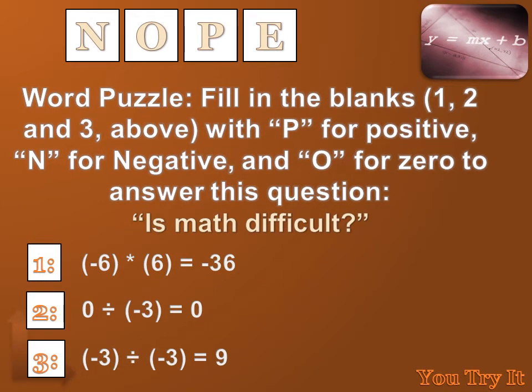Is math difficult? Well, let's find out. The answer to the first question was minus six times six equals minus 36. That's a negative number, so I put an N in that first box. The second question was zero divided by minus three. Well, zero divided by minus three equals zero, so I put a zero or an O in the second box. The third question was minus three divided by minus three. The signs of both of those numbers are the same, so my answer's going to be positive. And I put a P in that box. So, is math difficult? Nope.